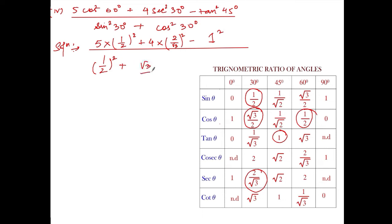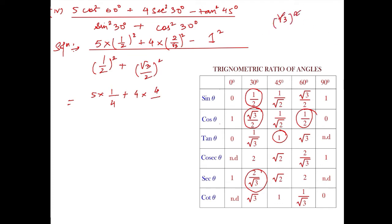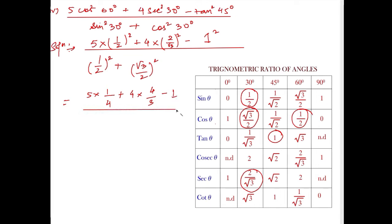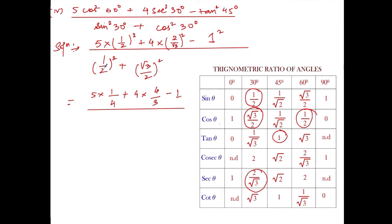Simplifying: 5 × (1/2)² = 5 × 1/4. For 4 × (2/√3)²: 2² is 4 and (√3)² is 3, so it becomes 4 × 4/3 = 16/3. Then minus 1² = 1. In the denominator: (1/2)² = 1/4, and (√3/2)² = 3/4.